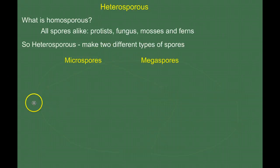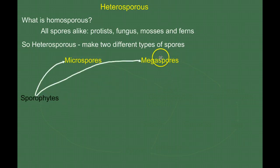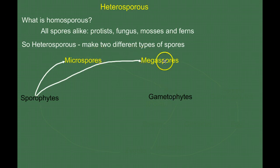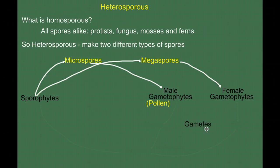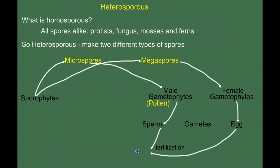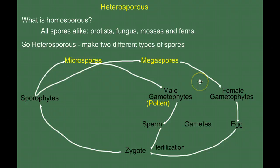Pause the video and write it down. Spores come from sporophytes. Now, what do spores become? Pause the video and write down what spores become. Spores become gametophytes. We have microspores and megaspores: the microspores become the male gametophyte, and therefore the megaspore becomes the female gametophyte. Remember, the male gametophyte is the pollen. Gametophytes make gametes — the female gametophyte makes egg, the male makes sperm. Sperm and egg are used in fertilization to make the zygote, which grows into the new sporophyte. The only difference between homosporous and heterosporous is that we have two distinct types of spores making a distinct female and male gametophyte. We'll elaborate more on this in the next video.